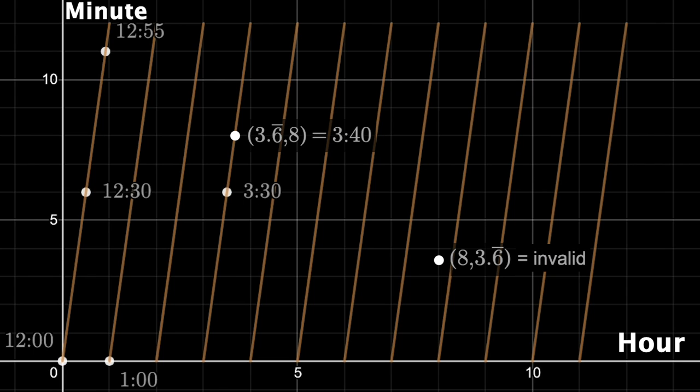But is there some point on the graph where we can flip the coordinates and have the new point still land on the graph? Well switching the x and y coordinates will reflect the point over the line y equals x. That's how inverse functions work.